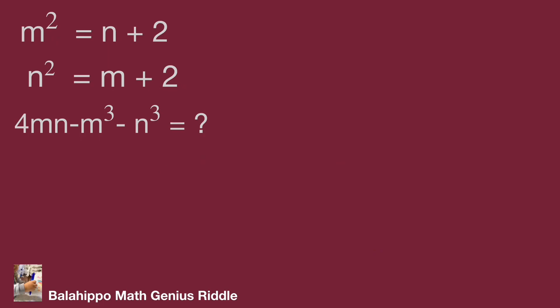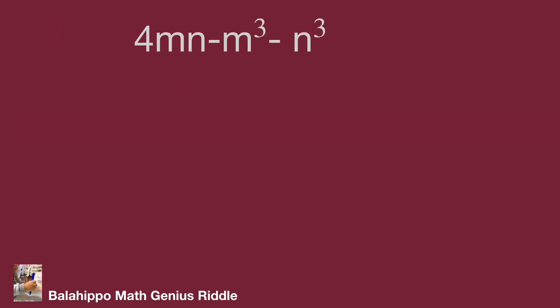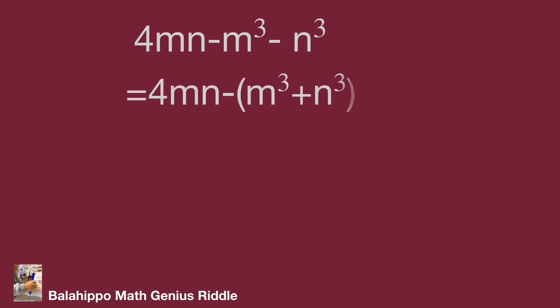We have the given equation m squared equal to m plus 2 and n squared equal to m plus 2. It's easy to find that m and n can be substituted into m cubed and n cubed. At the same time, m cubed minus n cubed is another key point to factorize as a combined quantity. Then we adjust the expression: 4mn minus m cubed minus n cubed, treating the bracket m cubed plus n cubed.